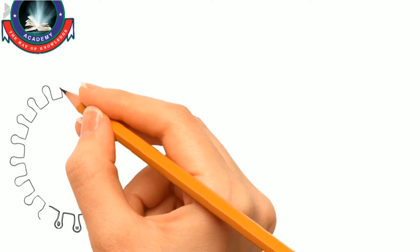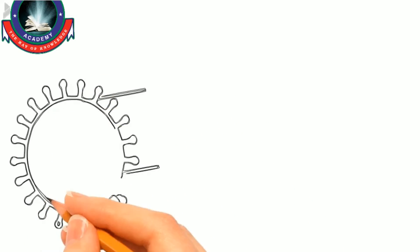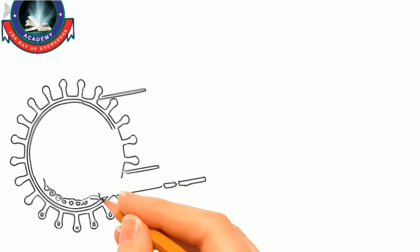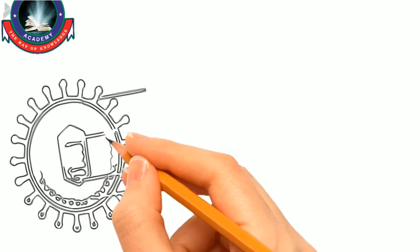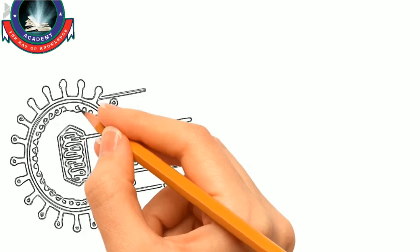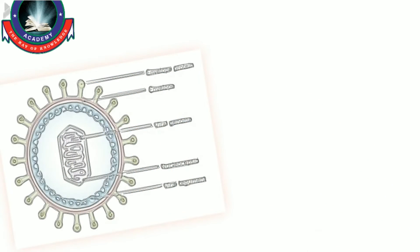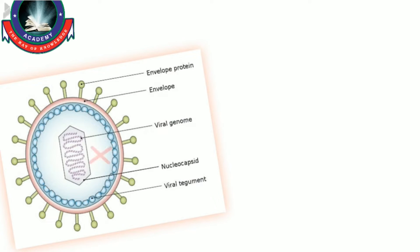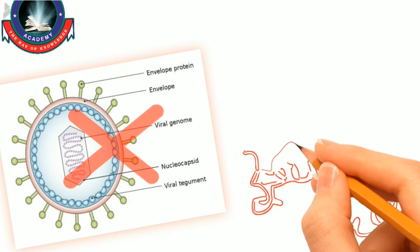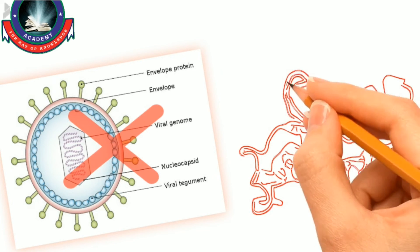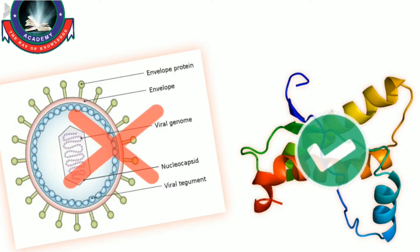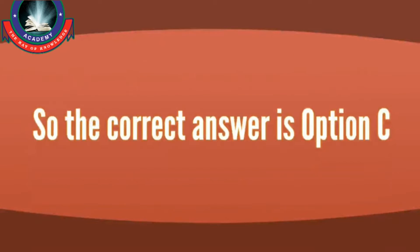Let's talk about the third option. This says that the protein coat is an infective constituent. Well, no — the only infective constituent in a virus is the genetic material, either the DNA or the RNA, and not the protein coat. So this is an incorrect option. Prions basically consist of abnormally folded proteins. Therefore, the correct answer for this question is Option C.